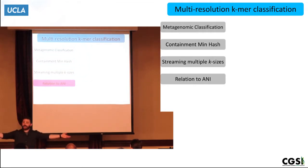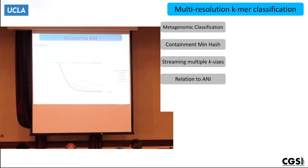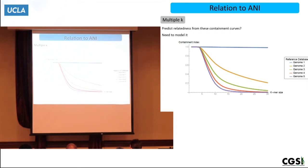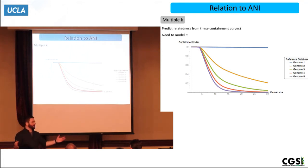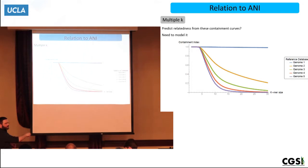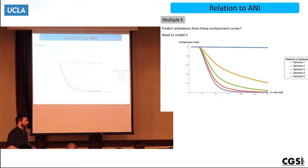Can we get some sort of evolutionary information from these containment curves? We have a bunch of different reference genomes, and using the ternary search tree we get curves of containment index versus K-mer size. Genome one is clearly in the metagenome. But what about the purple or red lines — maybe a reference genome is closely related to something in the metagenome but not exactly the same. Can we predict the relatedness of these genomes to the metagenome from these curves?